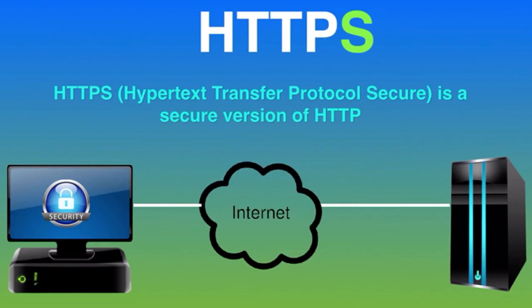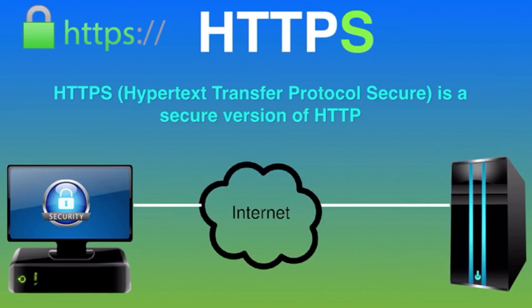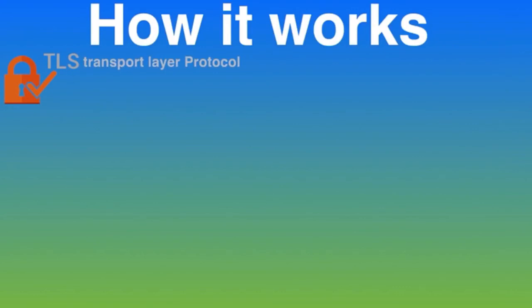For example, when you open a website that requires personal information, you will notice that an 'S' is added to HTTP, which means you are now using a secure protocol. Some browsers show a padlock, which indicates that secure HTTP is being used. HTTPS uses an encryption protocol called Transport Layer Security, or TLS, which was previously known as Secure Socket Layer, or SSL. TLS provides three main layers of protection.